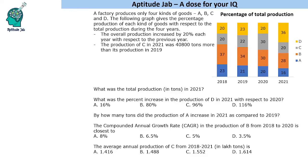Welcome to Aptitude Jab. This is a set based on a bar graph and stack graph. A factory produces only four kinds of items: A, B, C, and D. The graph gives the percentage production of each kind of goods with respect to the total production during four years. Whatever is the total production, this is the percentage of these four items A, B, C, D.